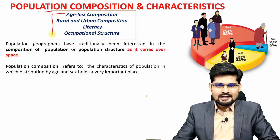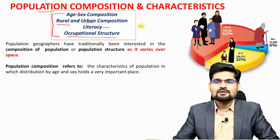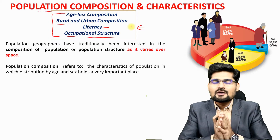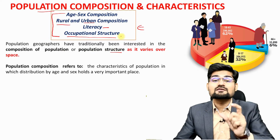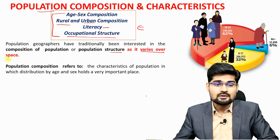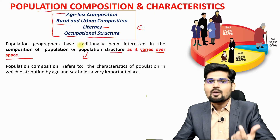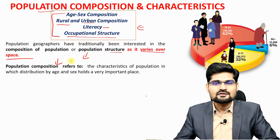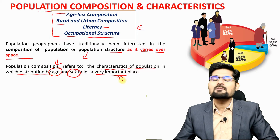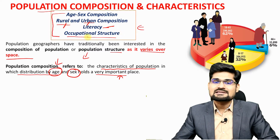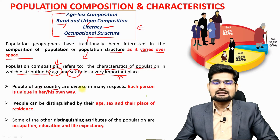We are going to learn about age-sex composition, rural-urban composition, literacy and occupational structure across the world and India in terms of population composition and characteristics. Population composition basically means there is a structure that we need to understand, because it varies over space and time. Population geography is not just about demographics — it's about the spatial and temporal component of this structure.